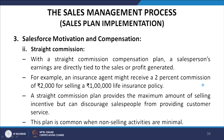With a straight commission compensation plan, a salesperson's earnings are directly tied to the sales or profit generated. For example, an insurance agent might receive a 2 percent commission of rupees 2,000 for selling a 1 lakh life insurance policy. A straight commission plan provides the maximum amount of selling incentive but can discourage salespeople from providing customer service. This plan is common when non-selling activities are minimal.